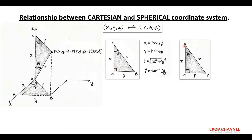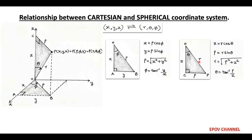Similarly, we take the second right angle triangle OCP. Here, OC equals to z, CP equals to rho, OP equals to r, and angle theta is made by radius r with respect to z axis. So, we can write z equals to r cos theta, rho equals to r sin theta, and angle theta equals to tan inverse of rho upon z. Also, r equals to under root of rho squared plus z squared. So, using these relationships, if Cartesian coordinates x, y, z are given, we can determine spherical coordinates r, theta, phi, or vice versa.